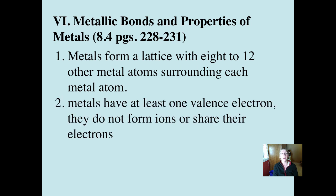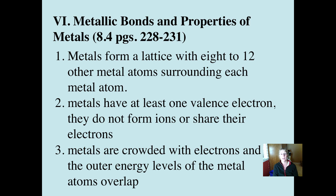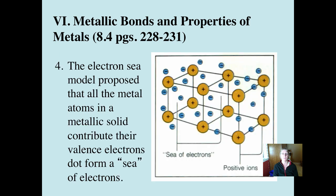As you know, metals have at least one valence electron. In this case, they're not forming ions or sharing their electrons — they can do that in ionic bonding and in some cases covalent bonding — but what it looks like is better displayed by the picture on the next slide. The outer energy levels of these metal atoms can overlap, and they're very crowded with electrons.